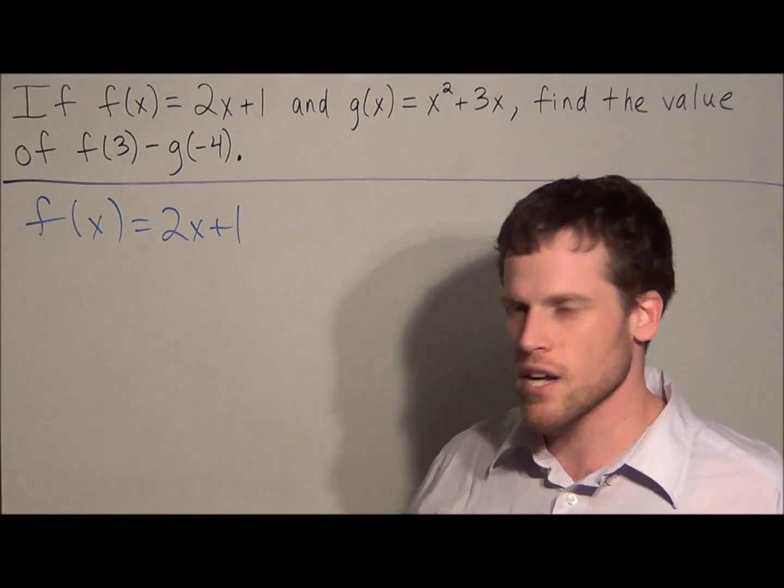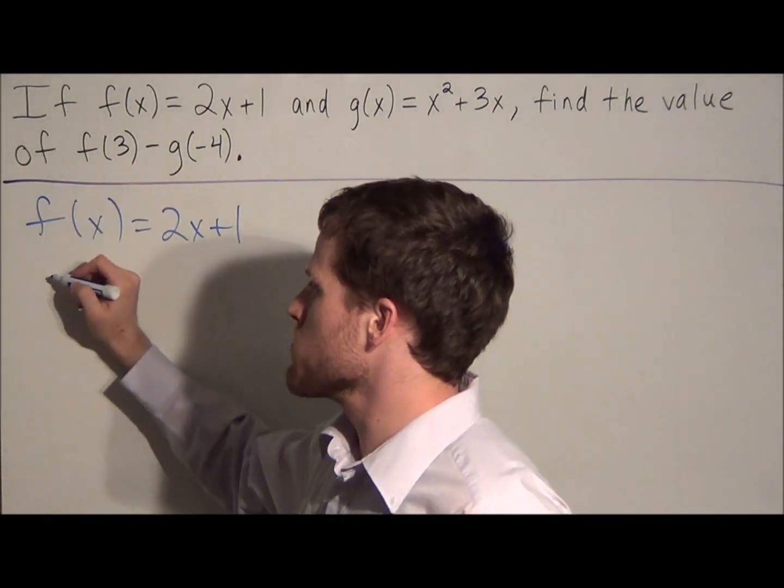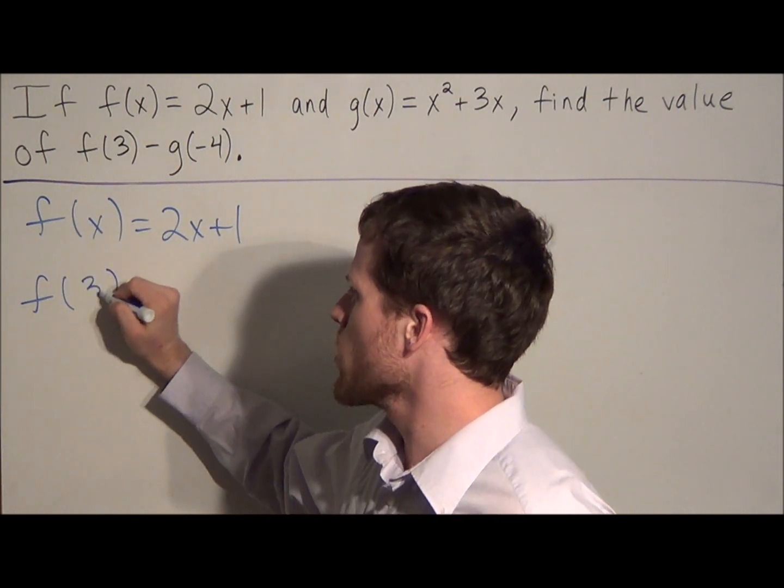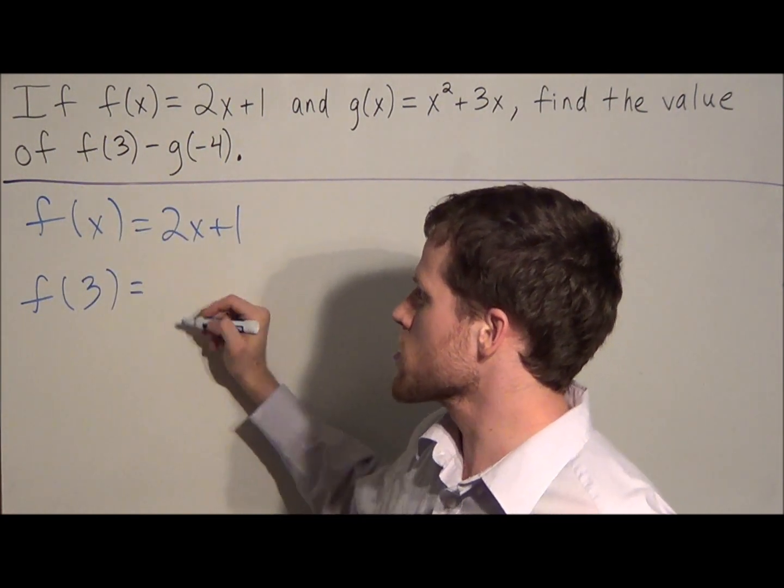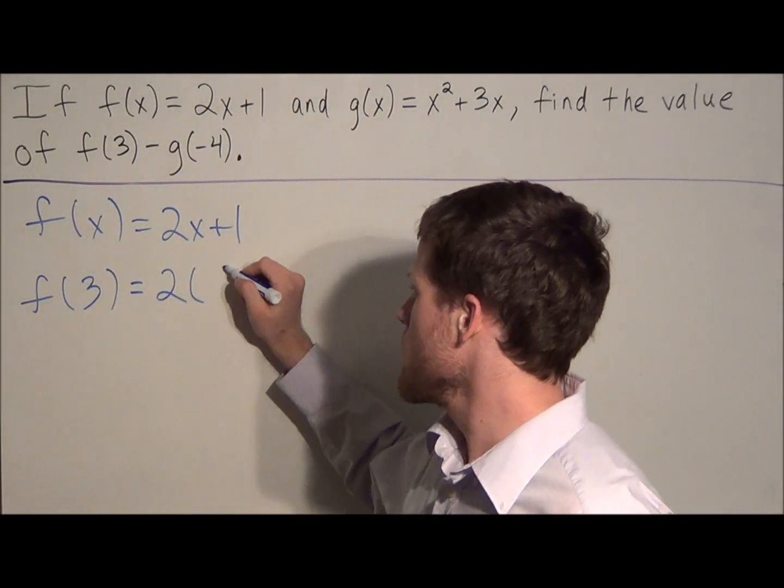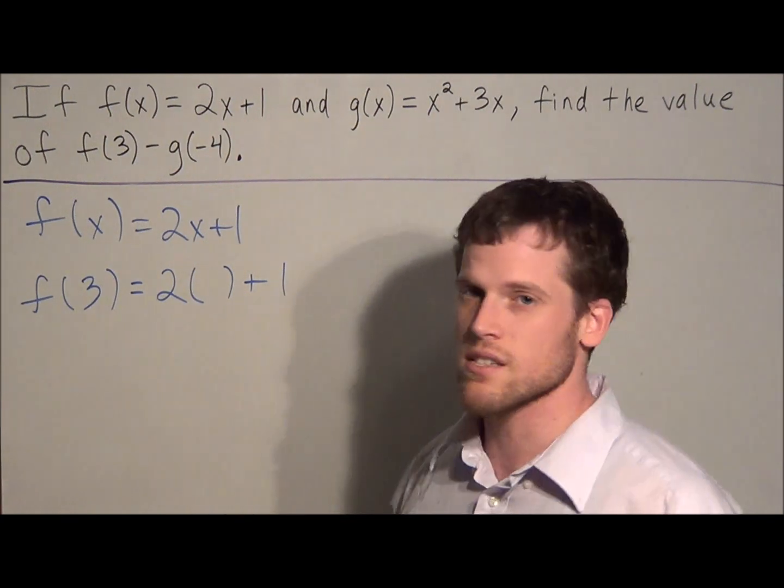So think of the function as a machine, and right now we're going to plug 3 into the machine. So anytime we see an x, we're replacing it with 3. So to the right of the equal sign, even though it may seem excessive, anytime you see an x, replace it with blank parentheses.